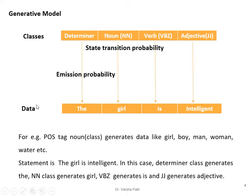The emission probability matrix is a conditional probability — it gives the chances of a word like 'girl' when the class is known. State transition is based on our bigram: bigram checks the appearance between two items, which is one-word history. It checks how many times, after a determiner, a noun appears — or how many times a determiner precedes a noun. This association is strong because before a noun, either a determiner or an adjective typically comes, and we verify this with the bigram model.